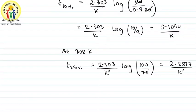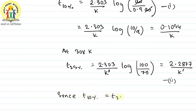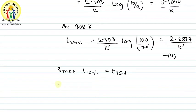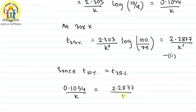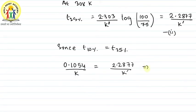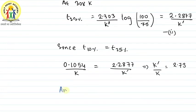Since both times are equal, we equate the two expressions — calling them equation 1 and equation 2. Setting them equal: 0.1054/k = 2.2877/k'. From this ratio, the value of k'/k comes out to be 2.73.